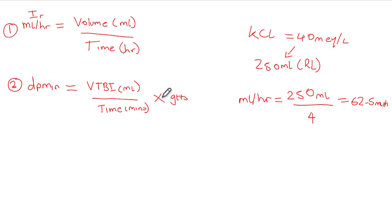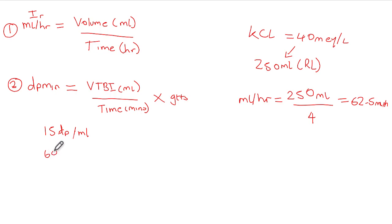Some giving sets deliver 15 drops per mil — these are called macro drip sets. Others deliver 60 drops per mil — these are called micro drip sets. In pediatric wards you would typically use 60, but on adult wards the standard is usually 15 drops per mil. Always check the giving set you have available.